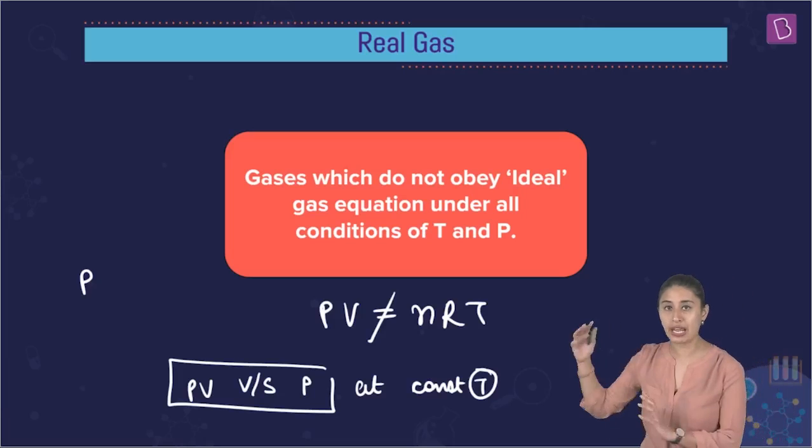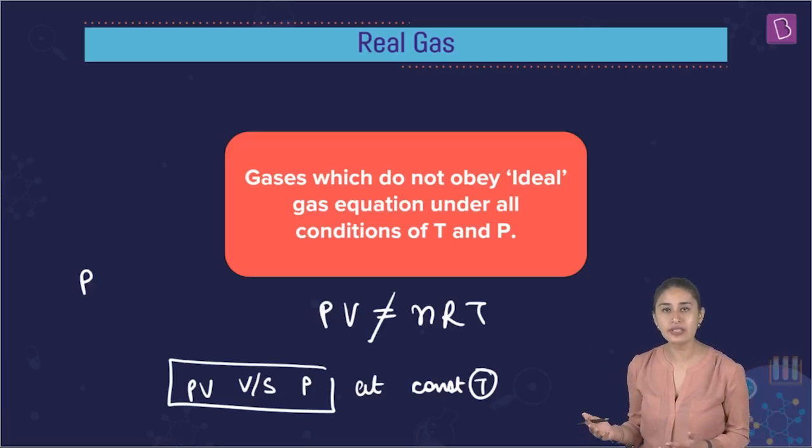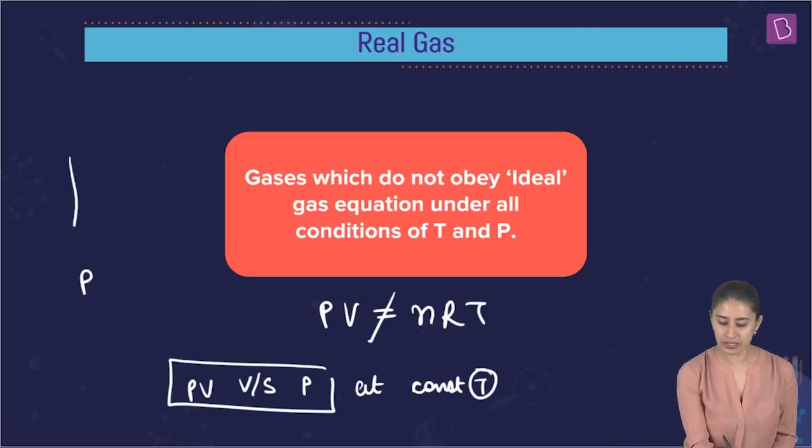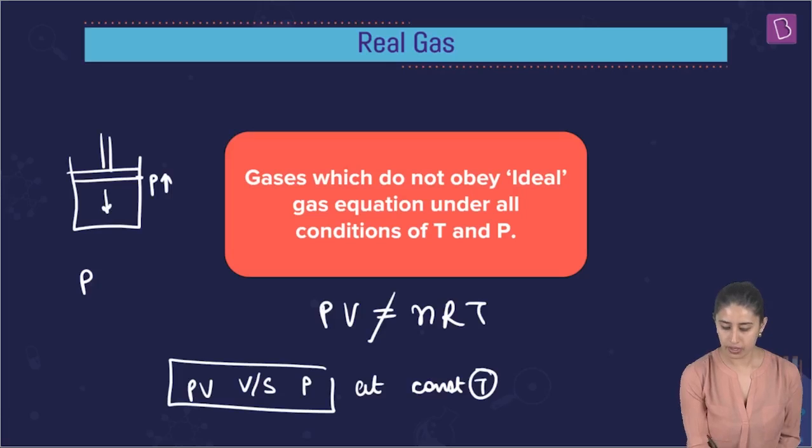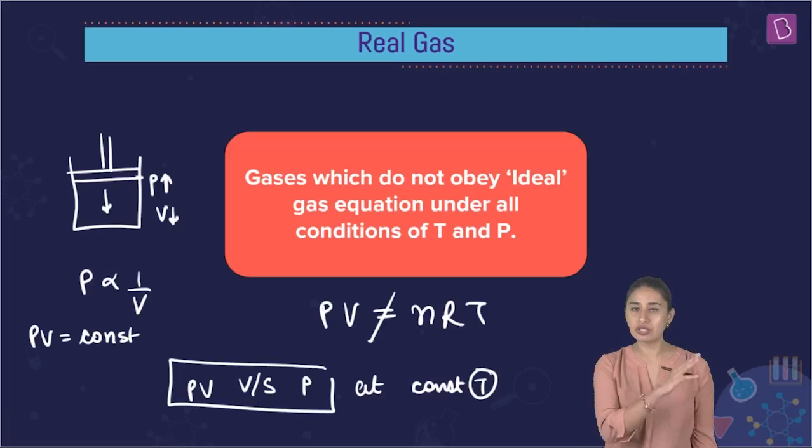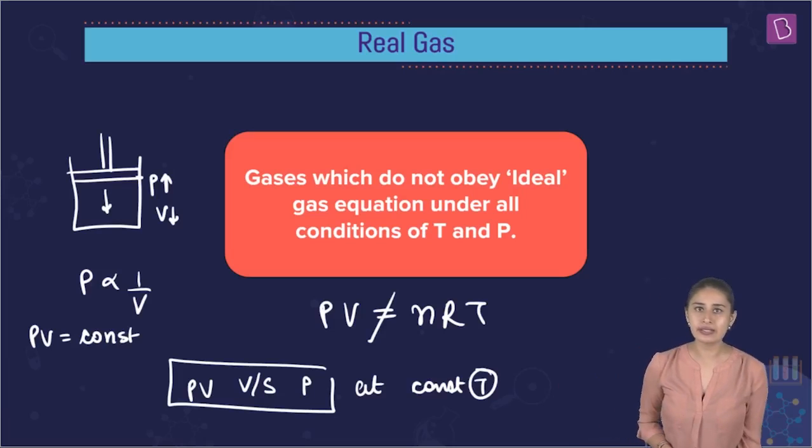If we increase the pressure, volume decreases. You have seen it very well. So we write the inverse proportionality. We know PV is equal to constant. So if we plot PV versus P, we should get a straight horizontal line, parallel to the x-axis.